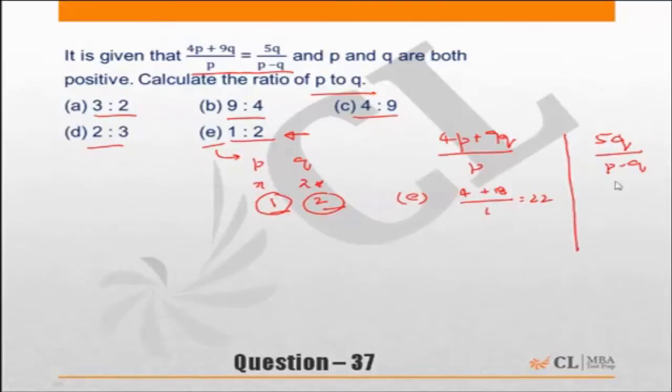What about the right hand side? It becomes 5 into 2, 10 upon minus 1. Choice e is incorrect because left hand side is a positive number, right hand side is a negative number.